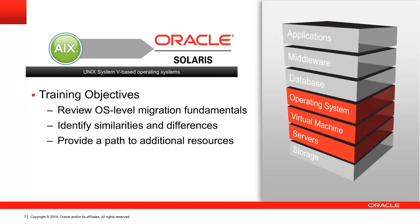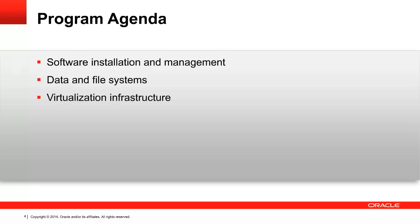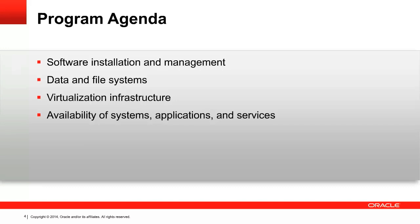In addition, look out for future library content covering specific topics as we have more content planned. To get you started with migration from AIX to Oracle Solaris, this training module covers software installation and management, data and file systems where we touch on database migration, the various options for virtualization, tools for assuring the availability of systems, applications and services, the all-important topic of security, and a brief look at scripting, before finishing by providing suggestions for further reading and training.